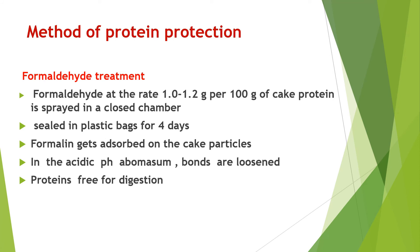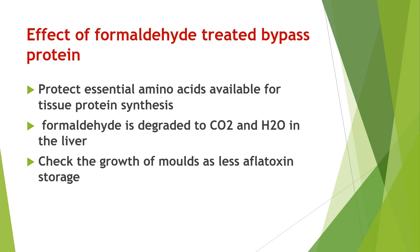Formaldehyde Treatment: Formaldehyde at the rate of 1 to 1.2 grams per 100 grams of cake protein is sprayed in a closed chamber, then sealed in a plastic bag for 4 days. Formalin gets absorbed on the cake particles in an acidic pH process. In the case of the abomasum, bonds are loosened and proteins are freed for digestion. Effects include protection of essential amino acids available for tissue protein synthesis, and formaldehyde is degraded to CO2 and H2O in the liver. It also checks the growth of molds and reduces aflatoxin storage.